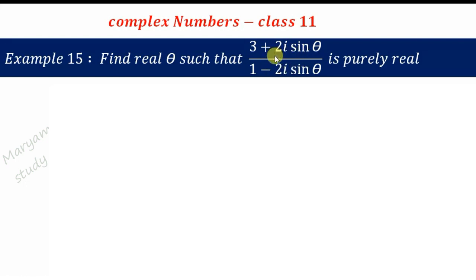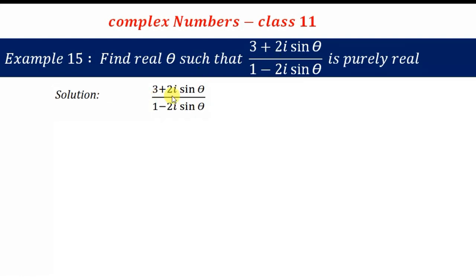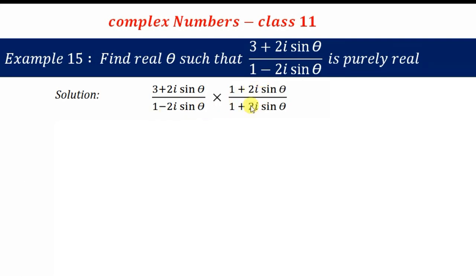To find theta, we first reduce the given complex number into its standard form, that is a + ib form. So let us pick (3 + 2i sinθ) / (1 − 2i sinθ). We can rationalize the denominator by multiplying and dividing by (1 + 2i sinθ).